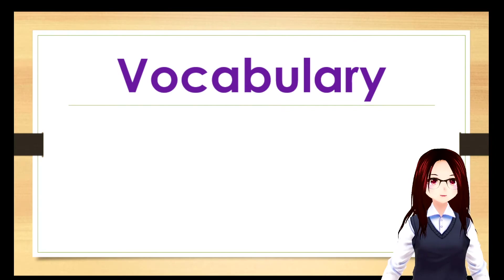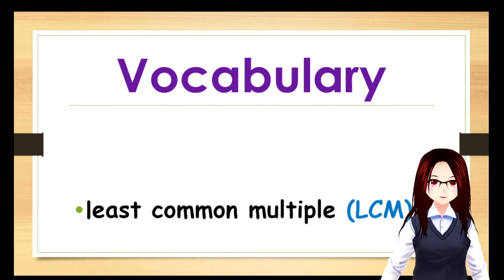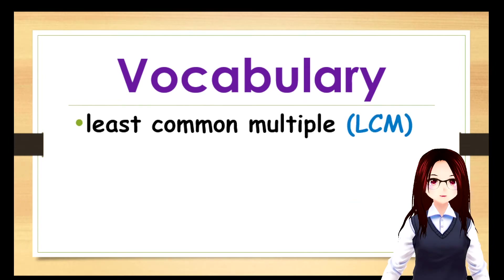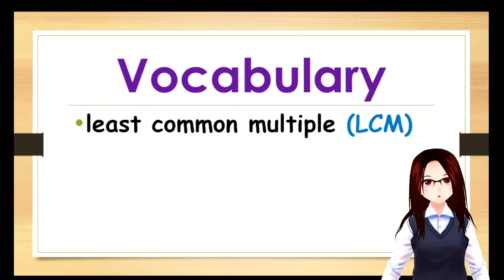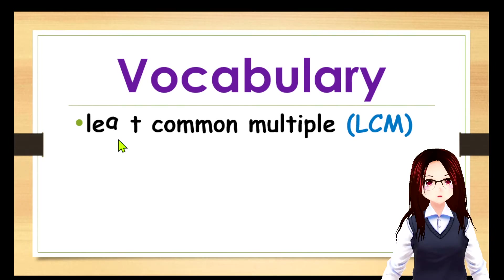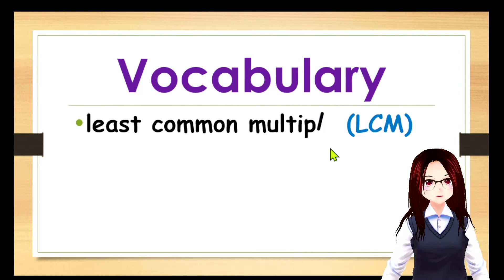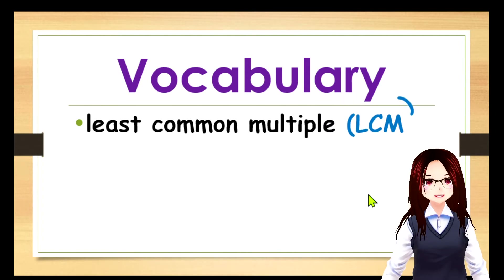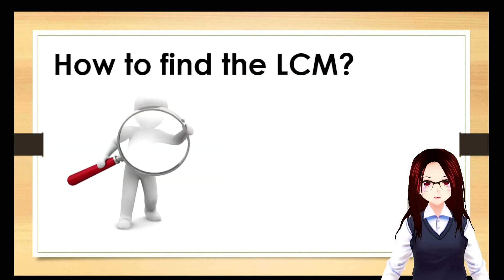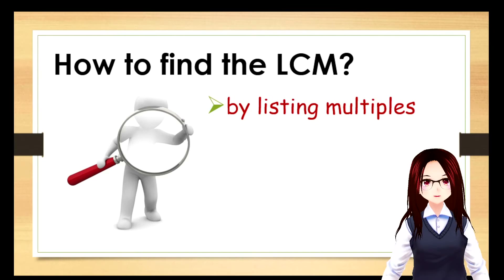First, let's have our vocabulary word: least common multiple. Repeat after me: least common multiple. Let's spell it: L-E-A-S-T C-O-M-M-O-N M-U-L-T-I-P-L-E, least common multiple, or LCM. So how do you find the LCM? First, by listing multiples, and second, by division algorithm.